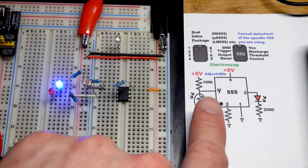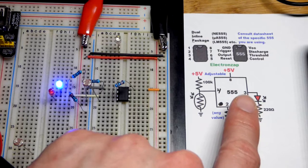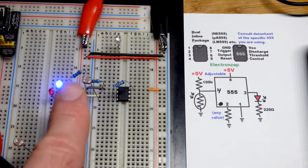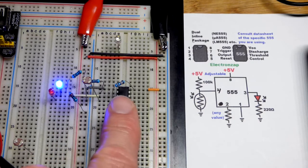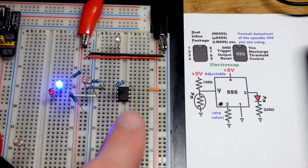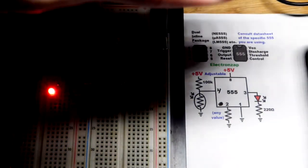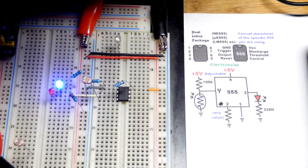The light dependent resistor here is determining whether the output is high or low. Right now the output is low. That's why the blue LED is lit up. Resistors are going positive through the LED and then to ground through the output right there. If we get the light dependent resistor dark enough, you can see the red LED lights up.